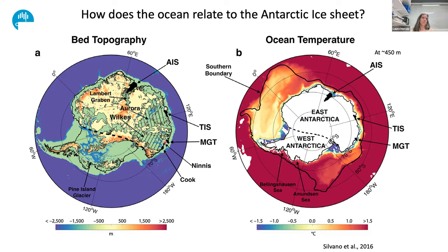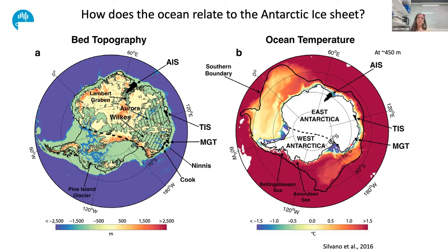These are gateways for parts of the ice sheet that sit below current sea level. On the right, we show ocean temperature at about 450 meters deep. The most striking feature is that for the regions where we know there's a lot of ice mass lost from West Antarctica, it's also the regions where warm waters occupy and dominate most of the water column in the continental margins.